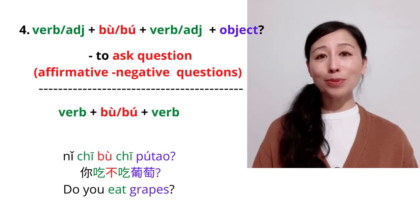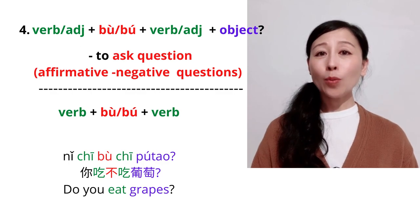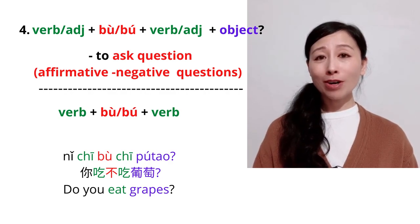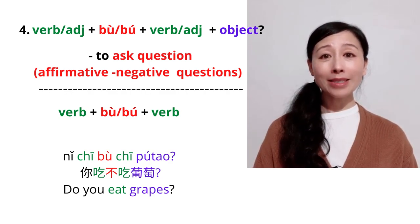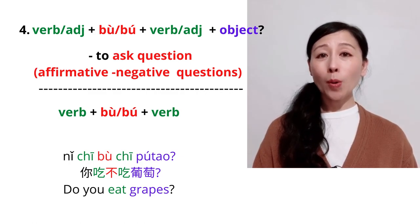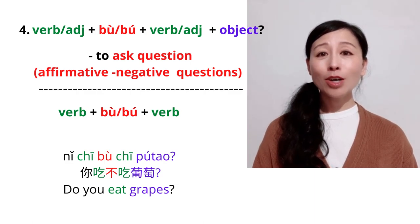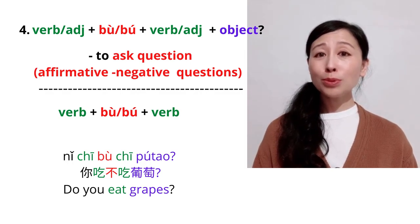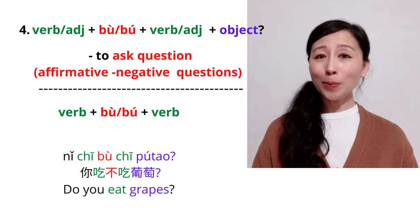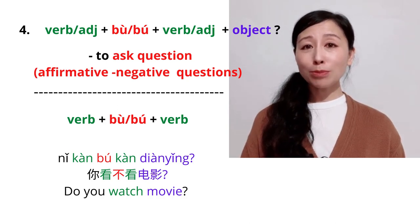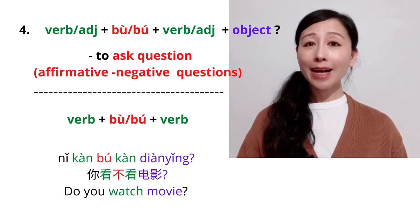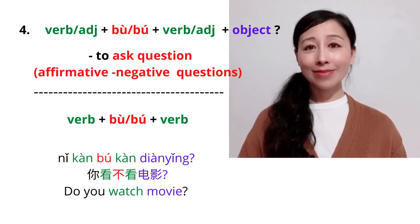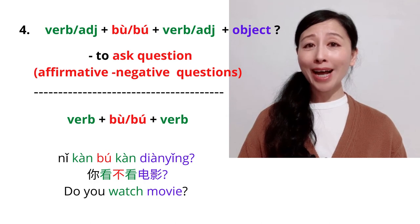The fourth usage of bu can be used to ask questions. We call it affirmative negative question. The structure is verb or adjectives plus bu plus verb or adjective plus object. For example, Do you eat grapes? Nǐ chī bù chī pútáo? Do you watch a movie? Nǐ kàn bù kàn diànyǐng?